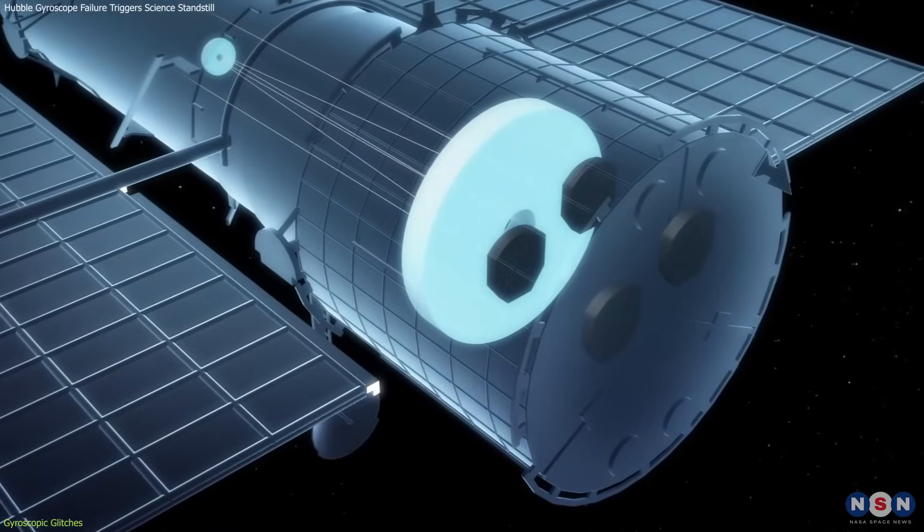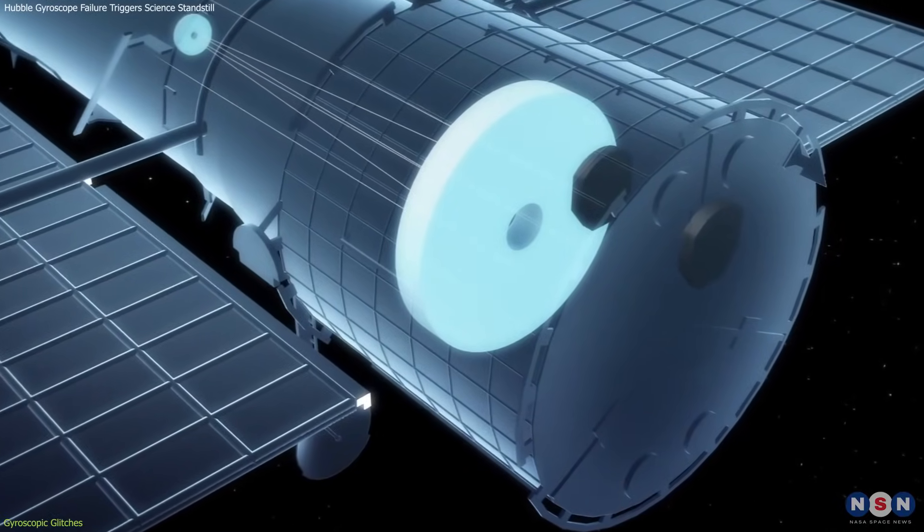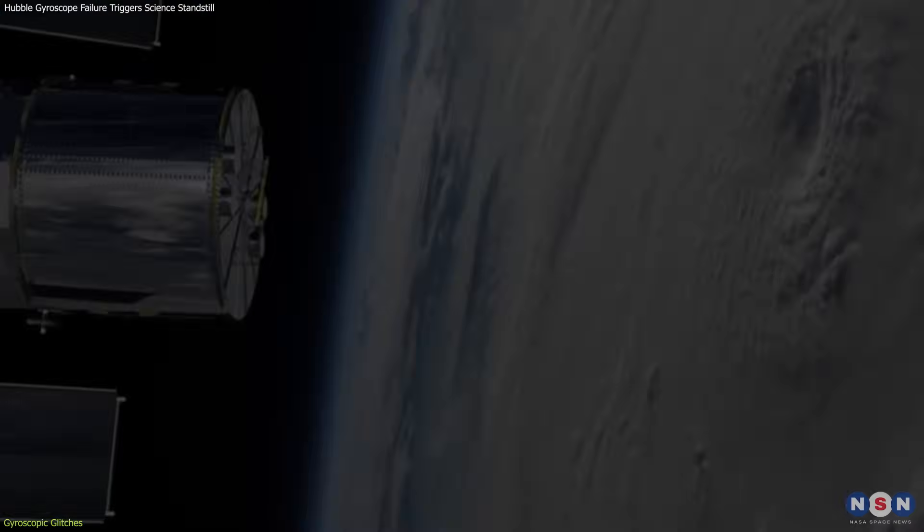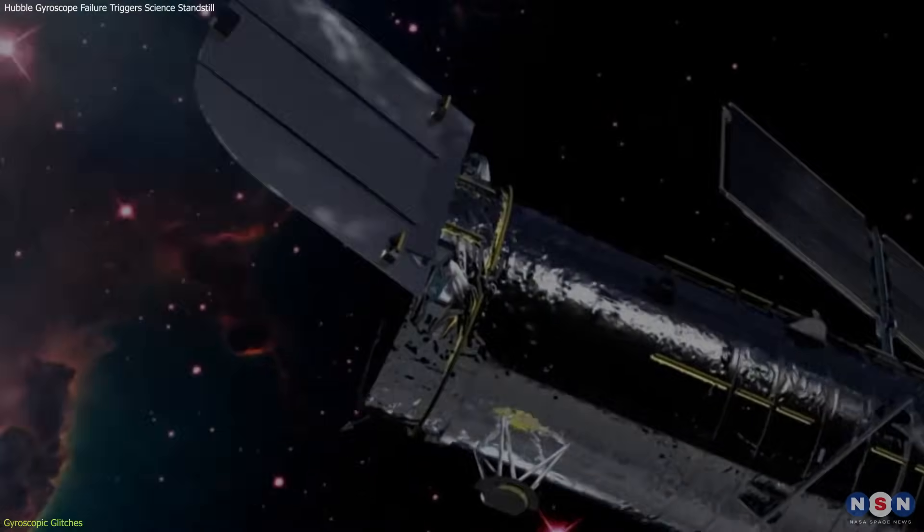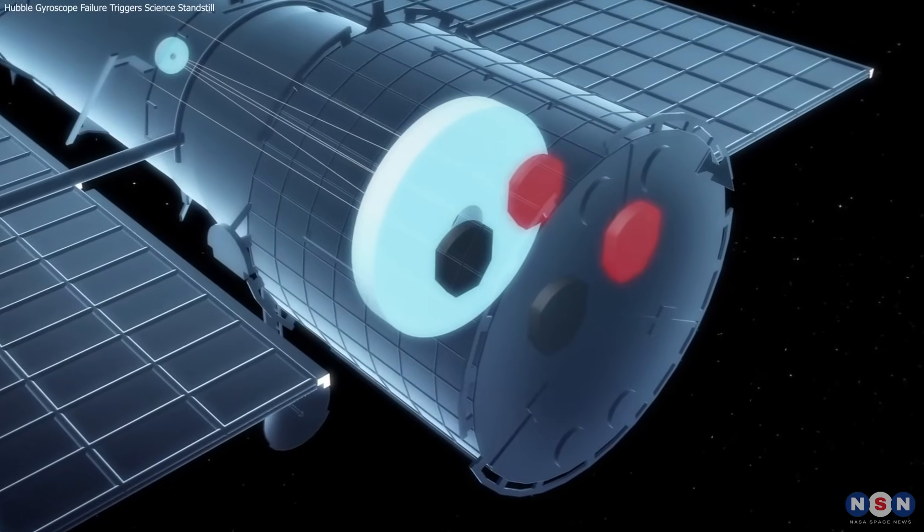NASA's ability to potentially operate Hubble with fewer gyroscopes, even just one, showcases an incredible feat of engineering foresight and flexibility, as it can operate despite the current hardware failures.